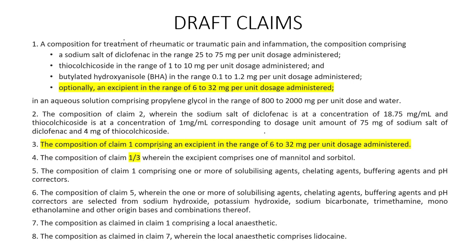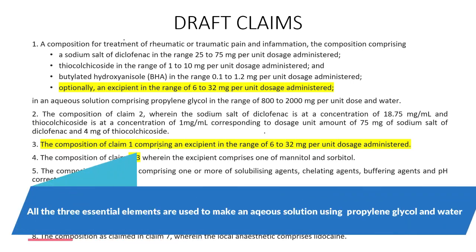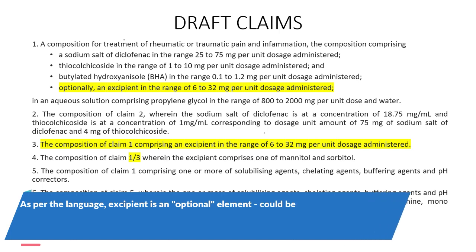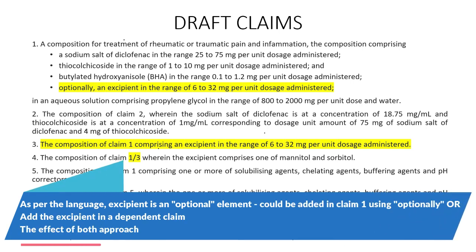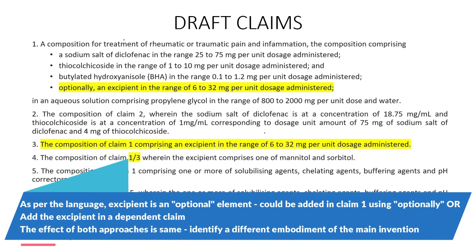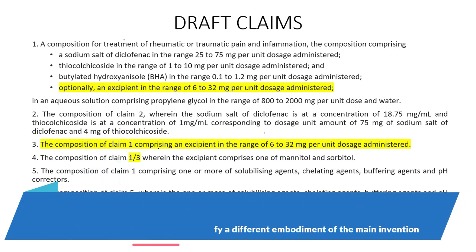As per the question paper, the essential elements are the sodium salt of diclofenac in a particular composition range, then theocolchicicide, and also BHA. The question paper also says there is an excipient which could be optionally added. You have the option of adding that element in the independent claim by specifying 'optionally,' or you could make a separate dependent claim for this particular excipient. I have kept both options: you could mention the excipient with the word 'optionally' in the independent claim itself, or make a dependent claim for it.